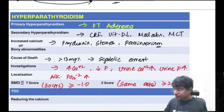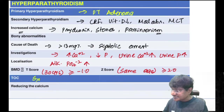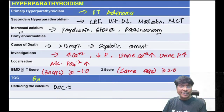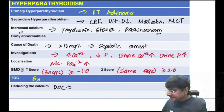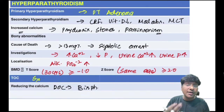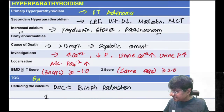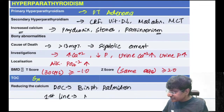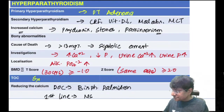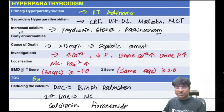Treatment of choice is surgical resection of parathyroid adenoma. To reduce calcium, give bisphosphonates (alendronate, zoledronic acid, or pamidronate). First line treatment to reduce calcium is normal saline. Other options are calcitonin and furosemide.